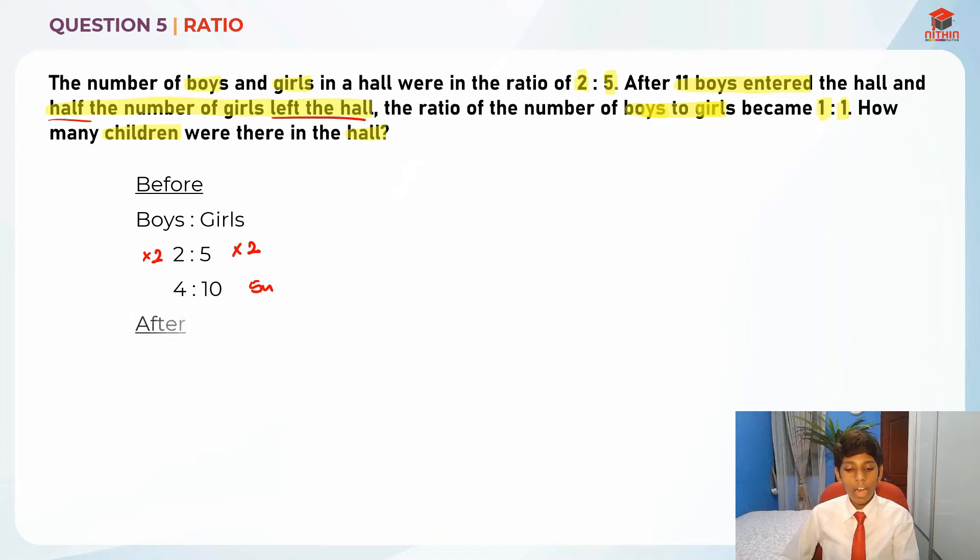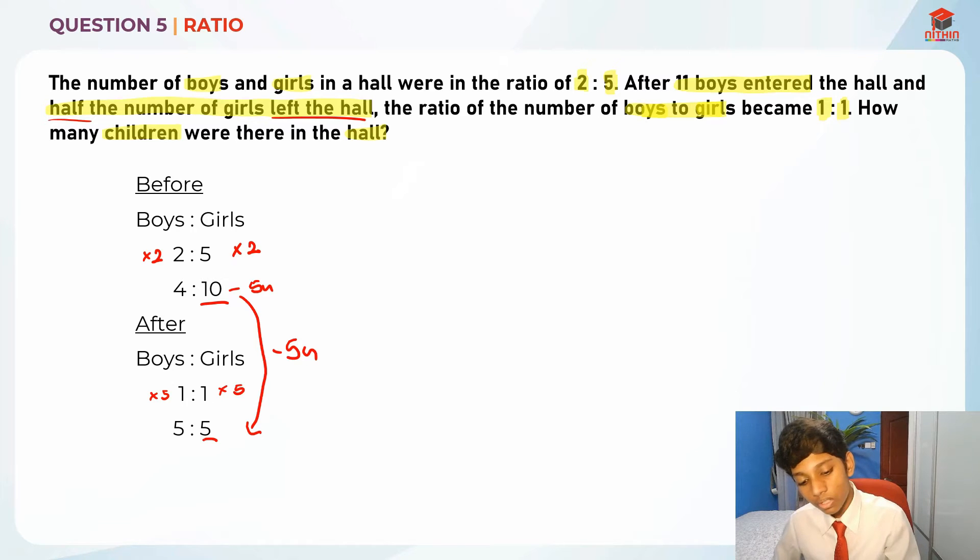So after we have boys to girls is 1 is to 1. So what am I going to do? I'm actually going to times 5 both sides so that when I take 10 minus 5 units, I get 5 units here so that the girls remain half gone. So there's actually a change in minus 5 units and for the boys, there is a change in plus 1 unit. Because 5 minus 4.